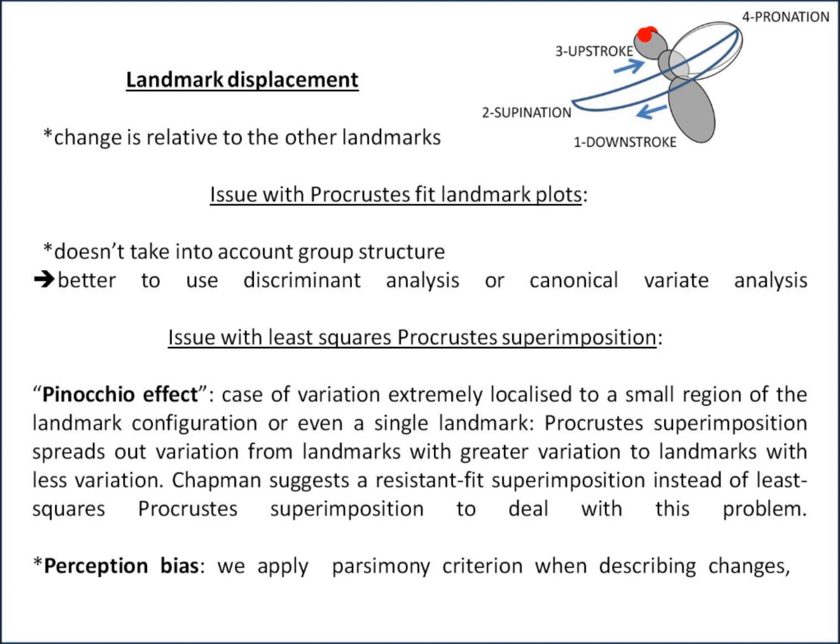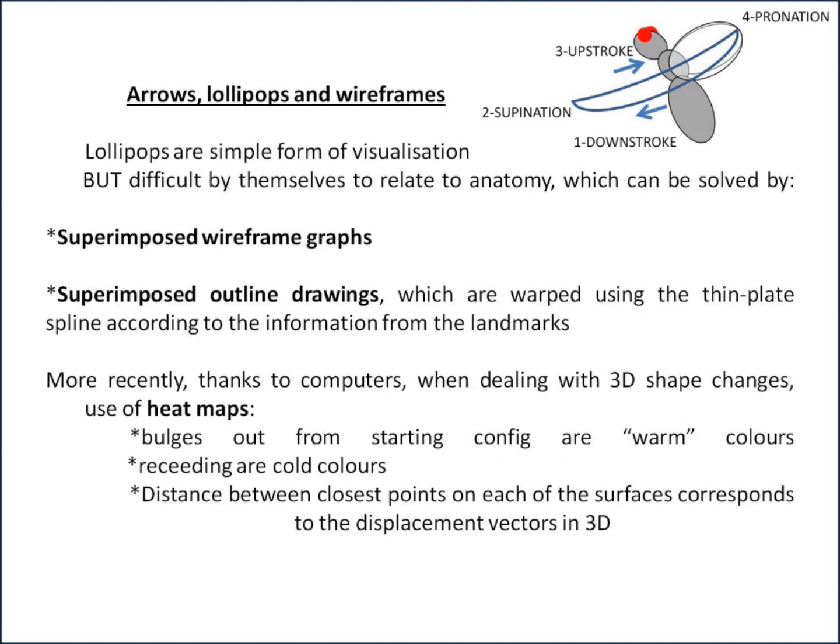Moving on to another visualization method: arrows, lollipops, and wireframes. Lollipops are a simple form of visualization but by themselves are quite difficult to relate to anatomy. This can be solved by superimposing a wireframe graph — simply lines connecting relevant landmarks — or outline drawings warped using thin plate spline according to the landmark information, which is more biologically descriptive, though it does effectively generate data between the landmarks.